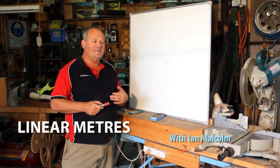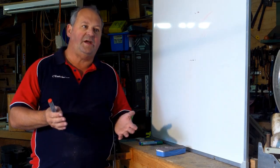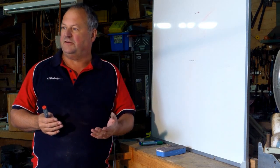Now what we're going to have a look at today is we're going to talk about coming from lineal metres into square metres and the area of a triangle and how they work together.